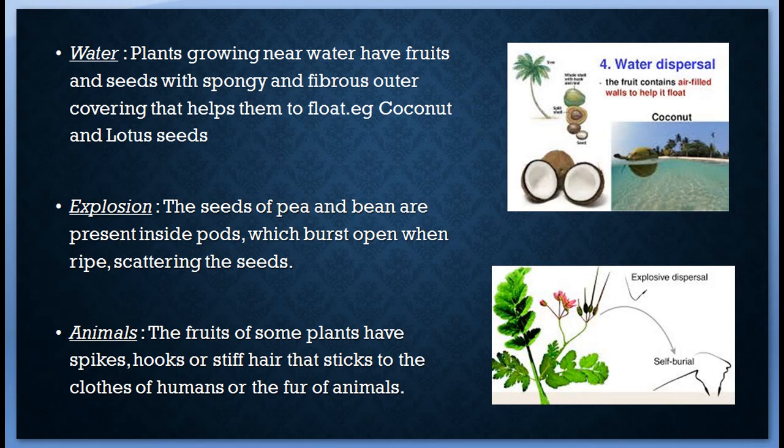One agent of dispersal is water. Plants that grow near water have fruits and seeds with spongy and fibrous outer coverings that help them float. Coconut has a fibrous covering, and lotus seeds are enclosed in a spongy structure and are dispersed by water.